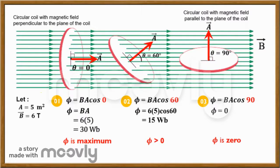For the first orientation, the vector A is exactly the same direction as vector B, so the angle is 0. That gives you magnetic flux phi equals B times A, or 6 times 5, which gives you 30 Weber.